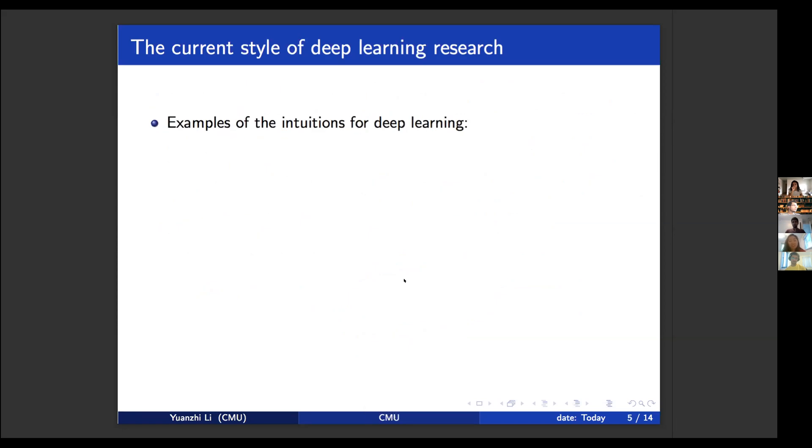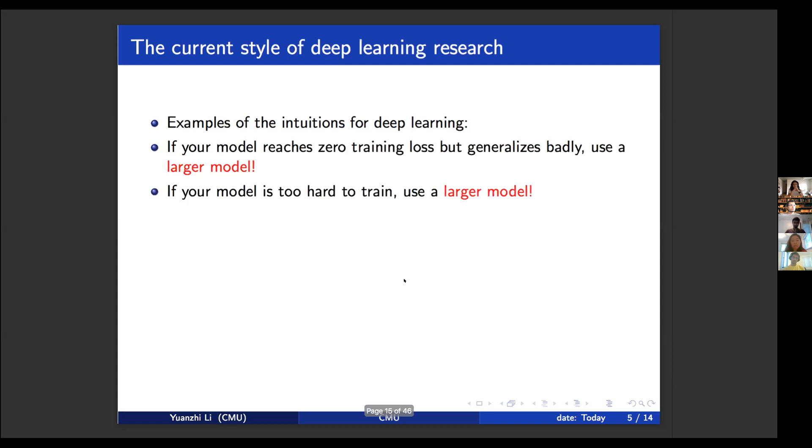So here are some examples about the intuition that you collect when running deep learning experiments. The first intuition, of course, everyone wants to use is that if your model reached zero training error but generalizes badly, you'll probably want to throw a larger model. So intuitively for deep learning, a larger model generalizes better, or if your model is too hard to train, in this case, you also want to throw a larger model. For deep learning, larger models also are easier to train.